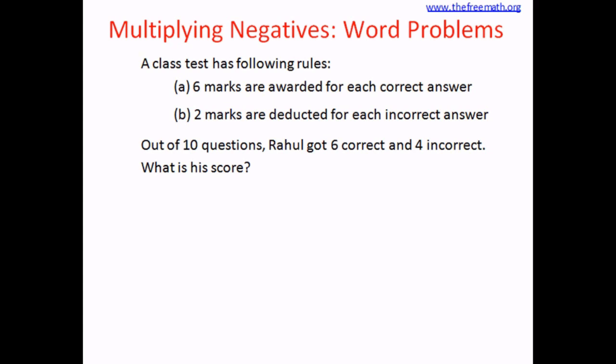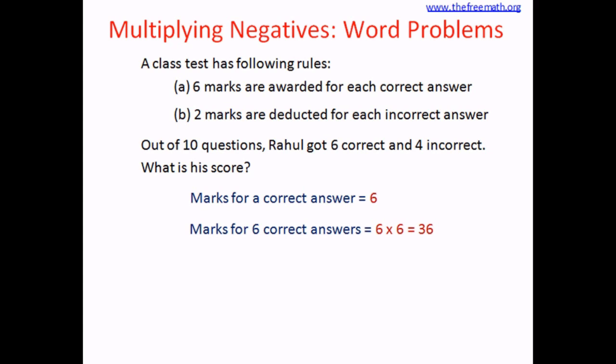The first rule is simple. If your answer is correct, you are going to get 6 marks. So marks for a correct answer equals 6. And Rahul got 6 correct answers, so marks for the 6 correct answers are 6 multiplied by 6, which equals 36.